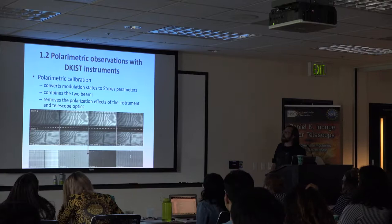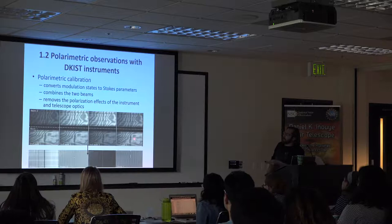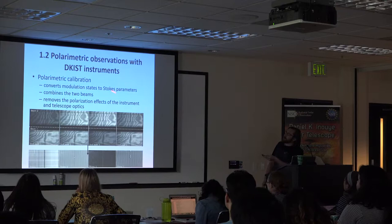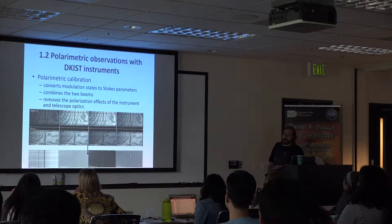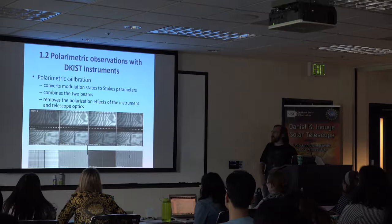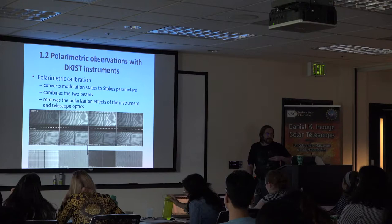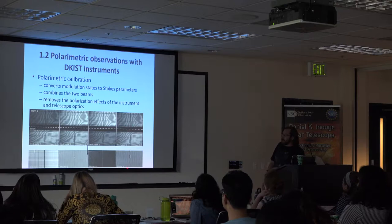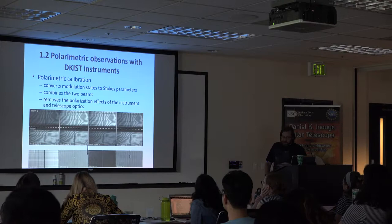What you actually get in the data: you have a certain number of modulation states, in this case from left to right, and two beams — so you have the same spectrum twice but with a change in sign for the polarization measurements. You first convert modulation states to Stokes parameters, then align the two beams on top of each other — that is the alignment exercise from this morning. Third, you correct for all of the polarization effects introduced by the optics in the telescope light path. If you do it right, you end up with a calibrated measurement of Stokes I, Q, U, and V on the Sun.